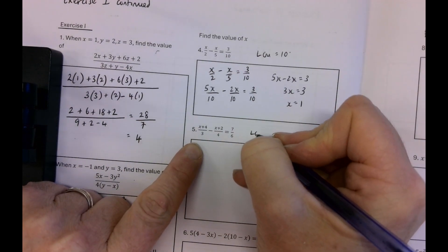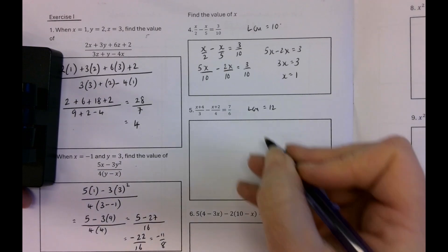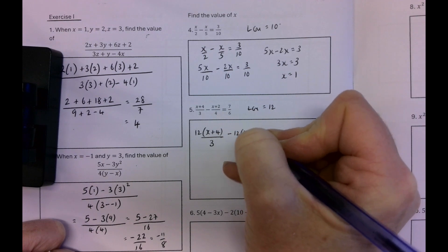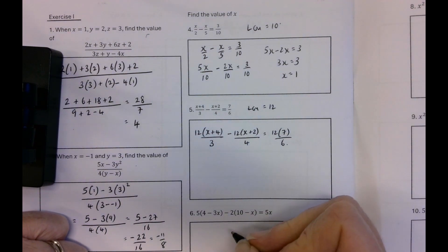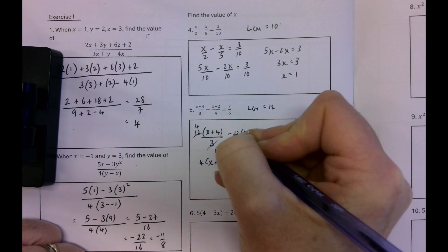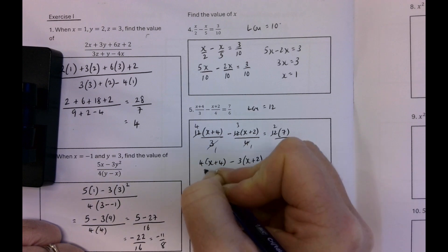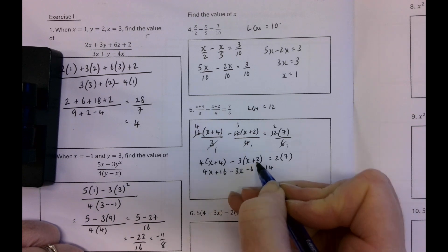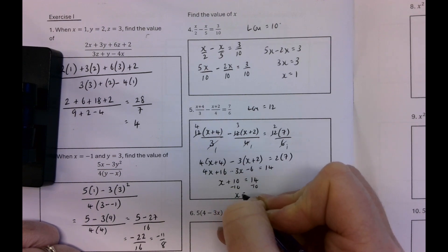This one we'll do slightly differently because there's another way. We could do the LCM which would be 12. We could write it all over the LCM, write it as a common denominator, or we can multiply everything by the LCM. So depending on how the question is phrased you can choose what you want to do. Sometimes they tell you to first of all write it as a fraction, as a single fraction and then solve. But if they don't tell you that you can do whatever you like. So that could be 4 by x plus 4 minus 3 by x plus 2 is equal to 2 by 7. So 4x plus 16 minus 3x minus 6 is equal to 14. Be careful there. Minus 3 by plus 2 is minus 6. So I've got x plus 10 is equal to 14. So x is equal to 4.